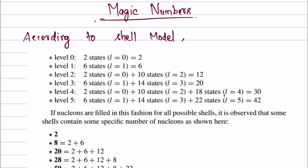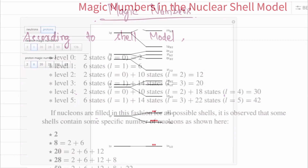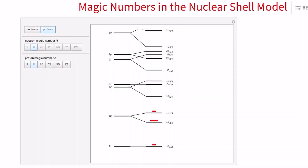That is the nuclear shell model. We need to know in terms of nuclear stresses. We say magic numbers. When the magic numbers are present, the nucleus is more stable. Now, you can see here the nuclear shell model.